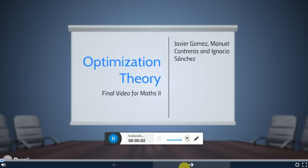Hi everyone, hi Rafif. This is our final video for Math 2. We'll be talking about optimization theory. We are Javier Gómez, Manuel Contreras and Ignacio Sánchez, and we are going to talk about discriminating monopoly and monopsonism.